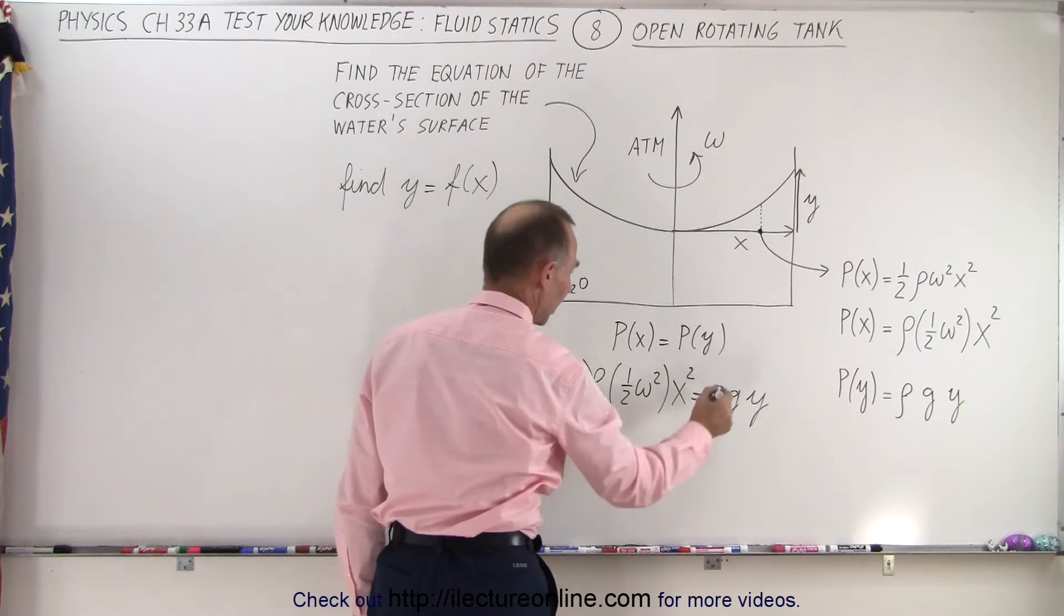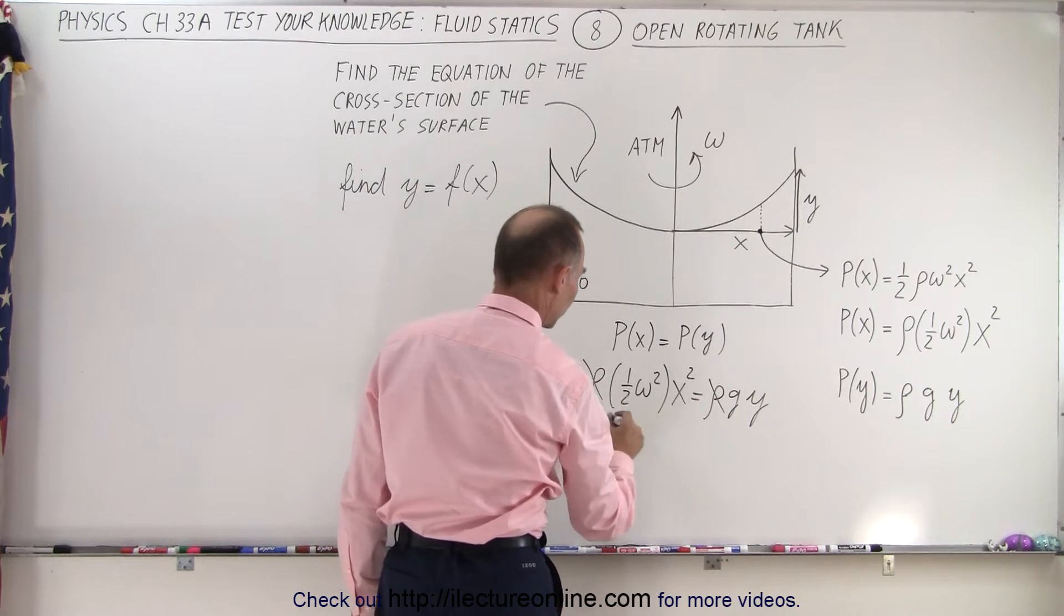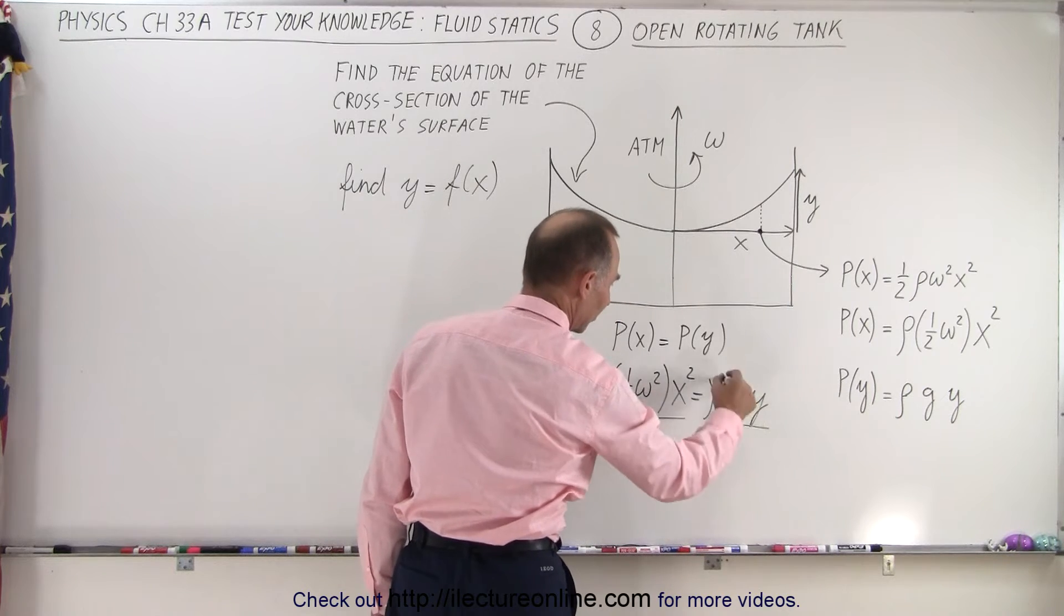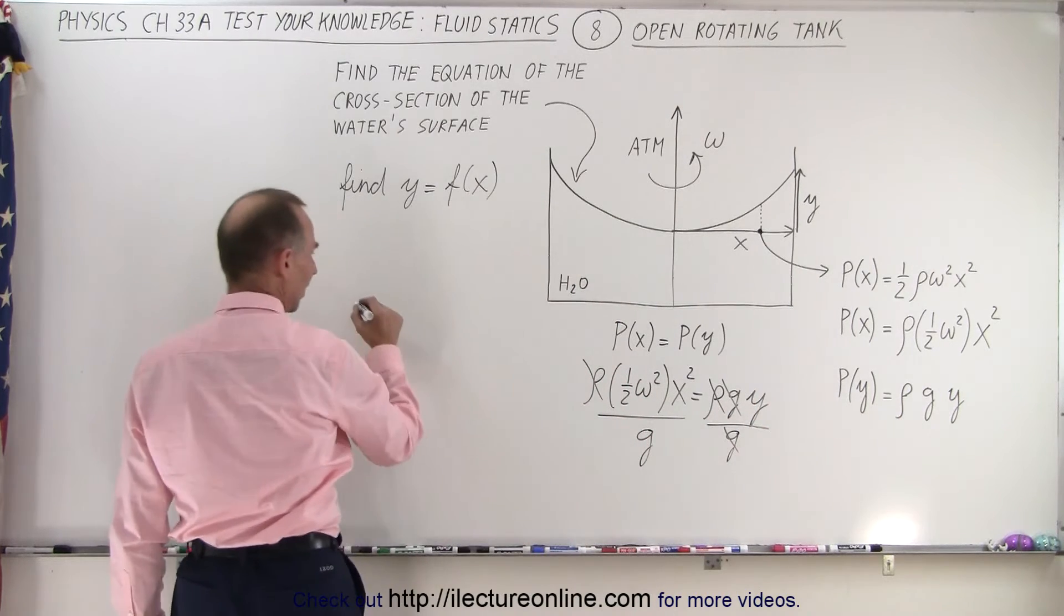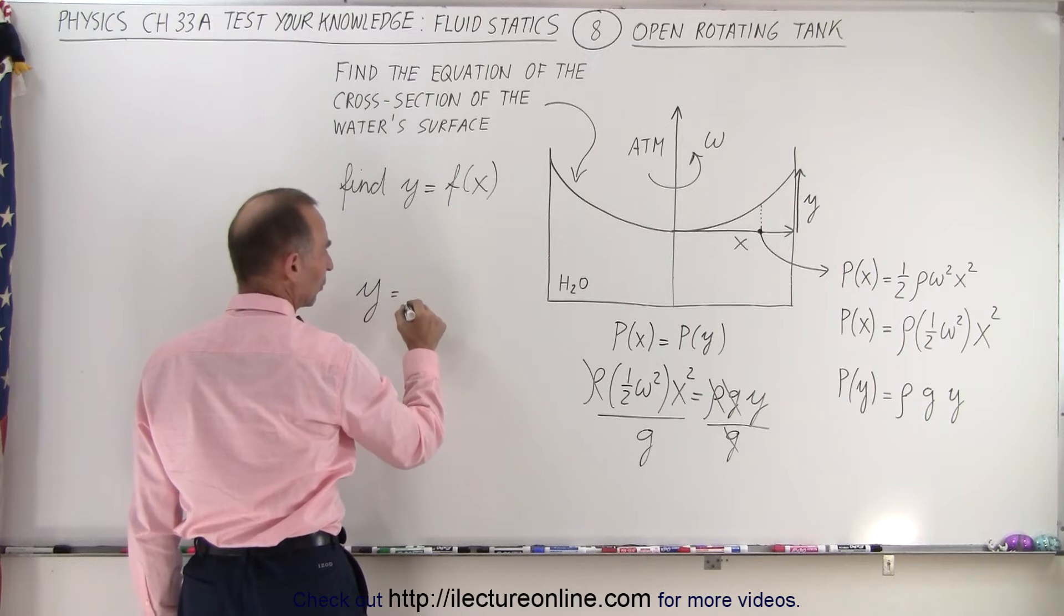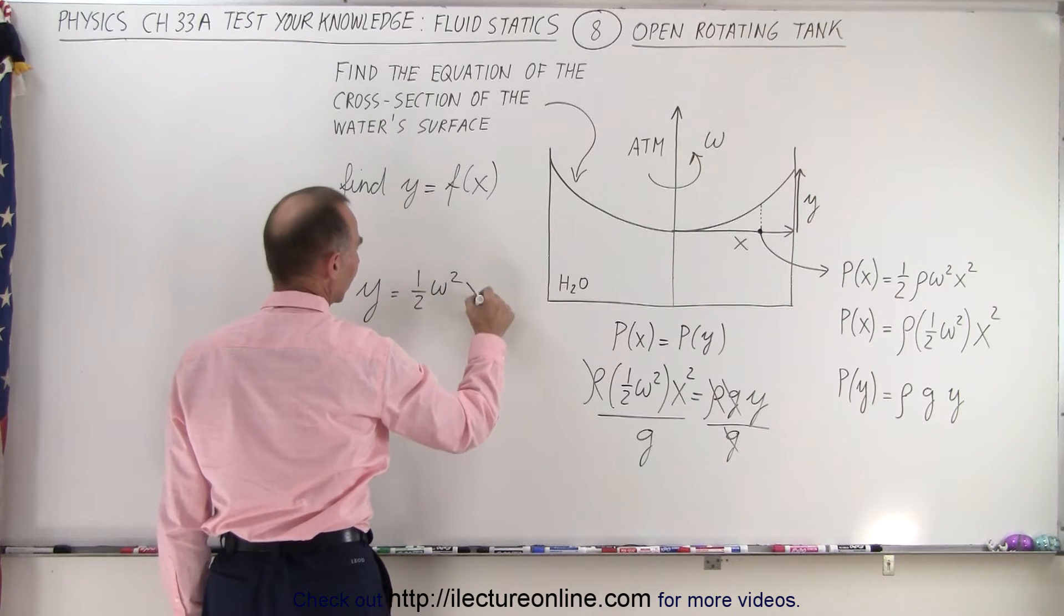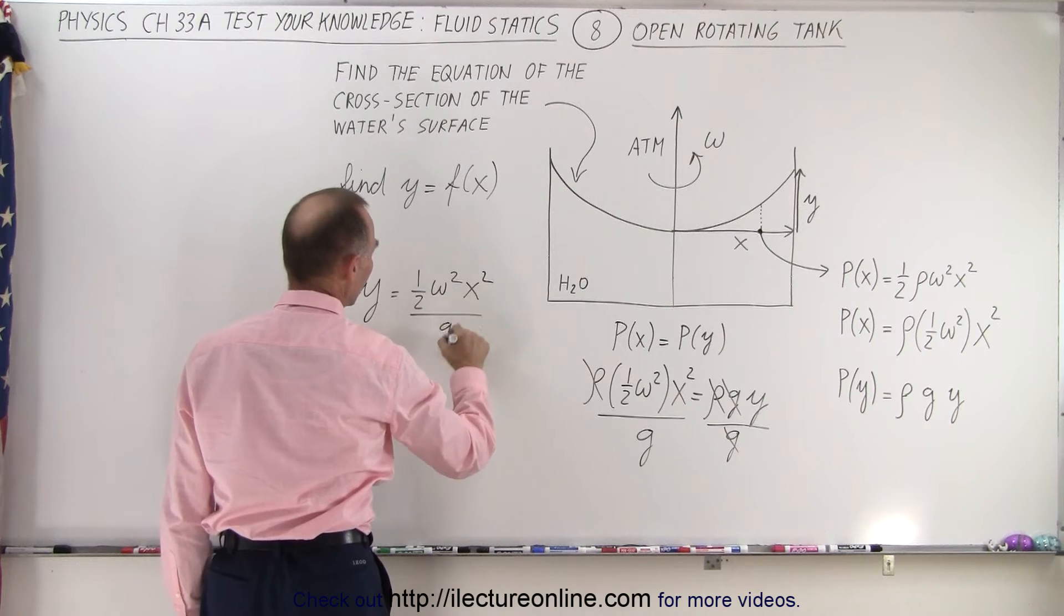First of all, the densities cancel out, and I'm going to divide both sides of the equation by g, which means that g's cancel out on this side, which means that leaves us with y is equal to one-half omega squared times x squared divided by g.